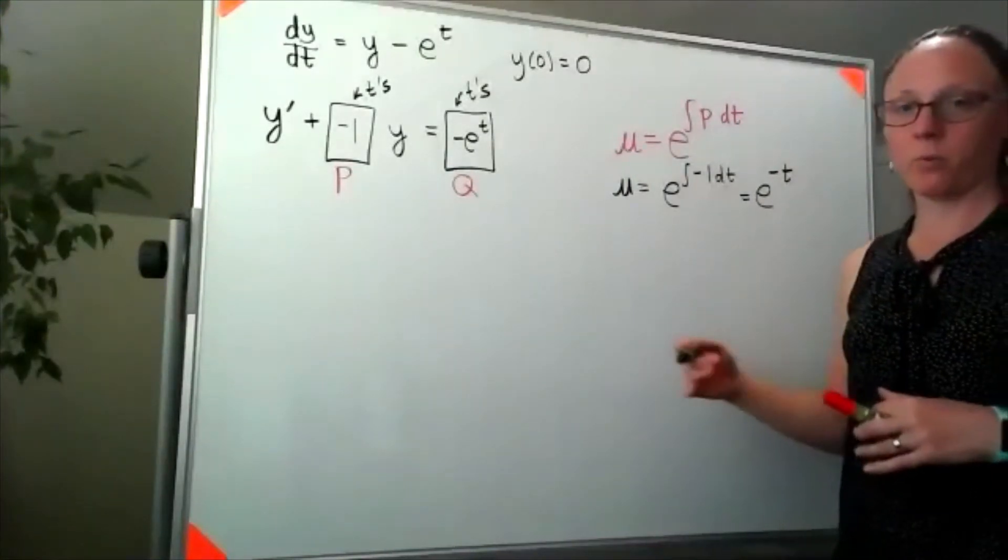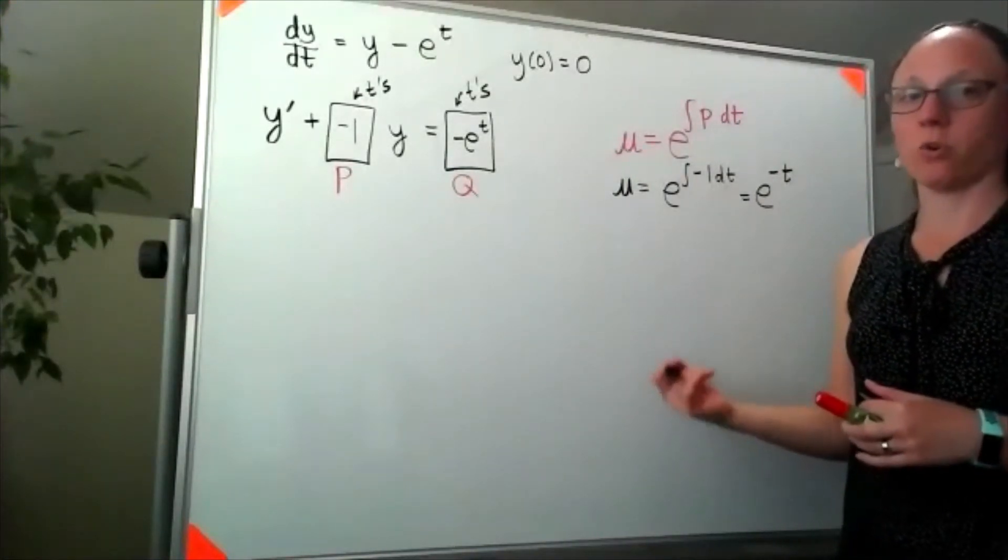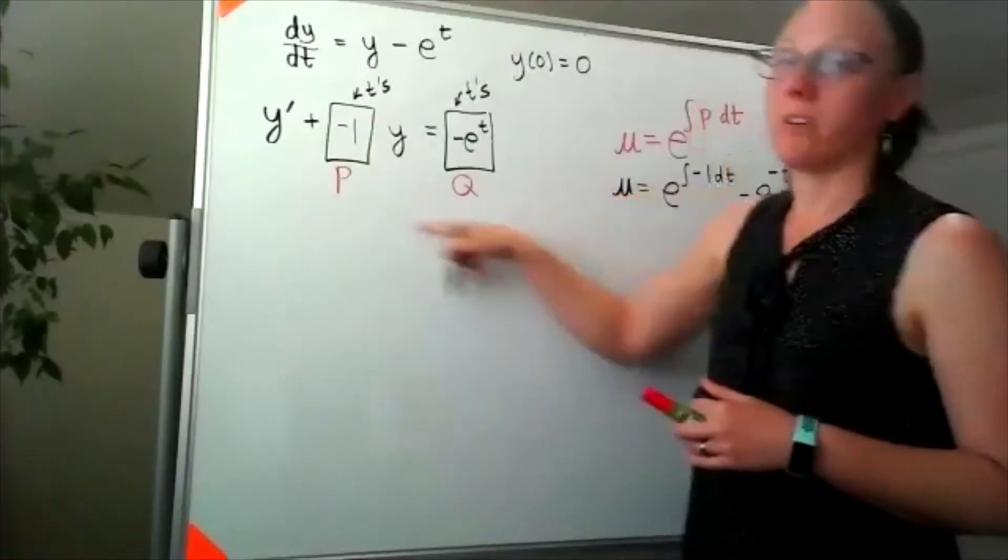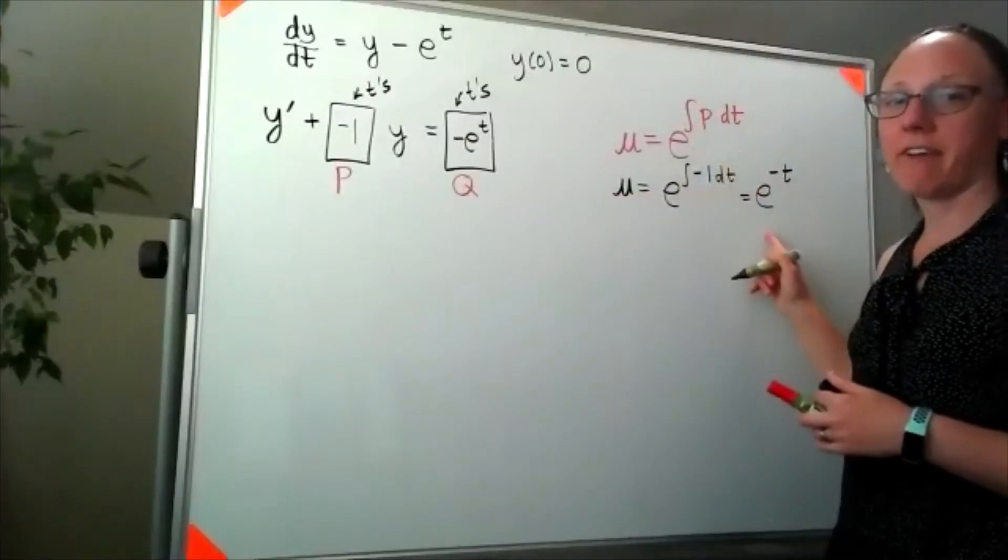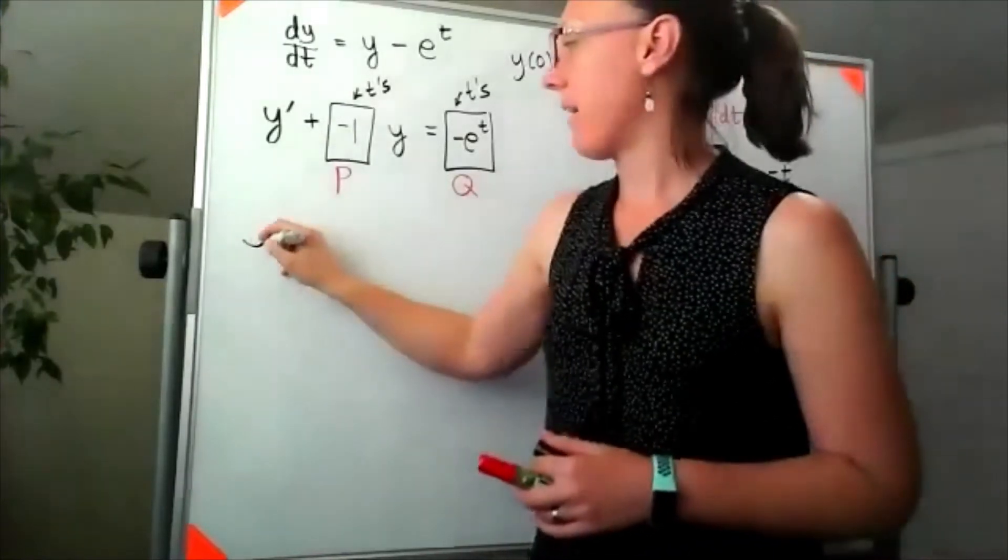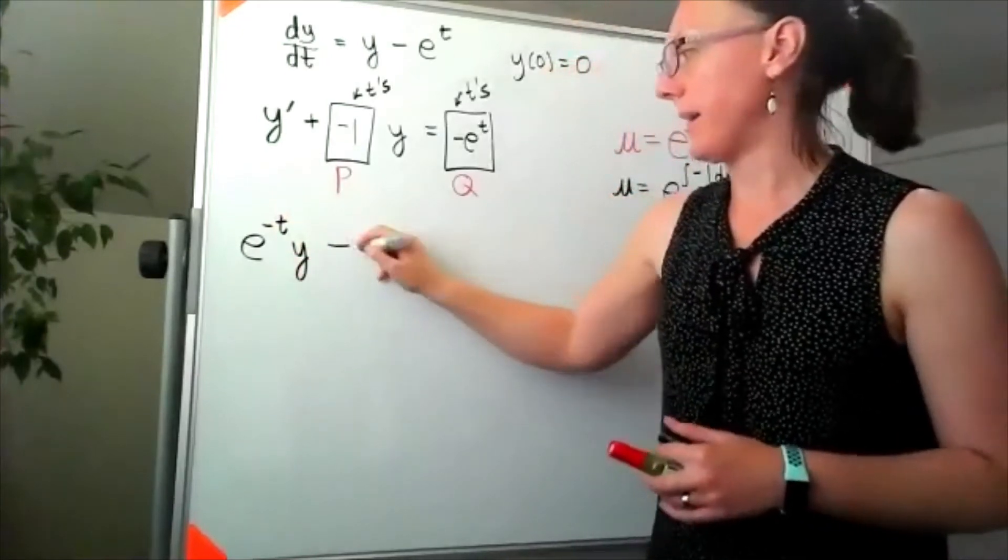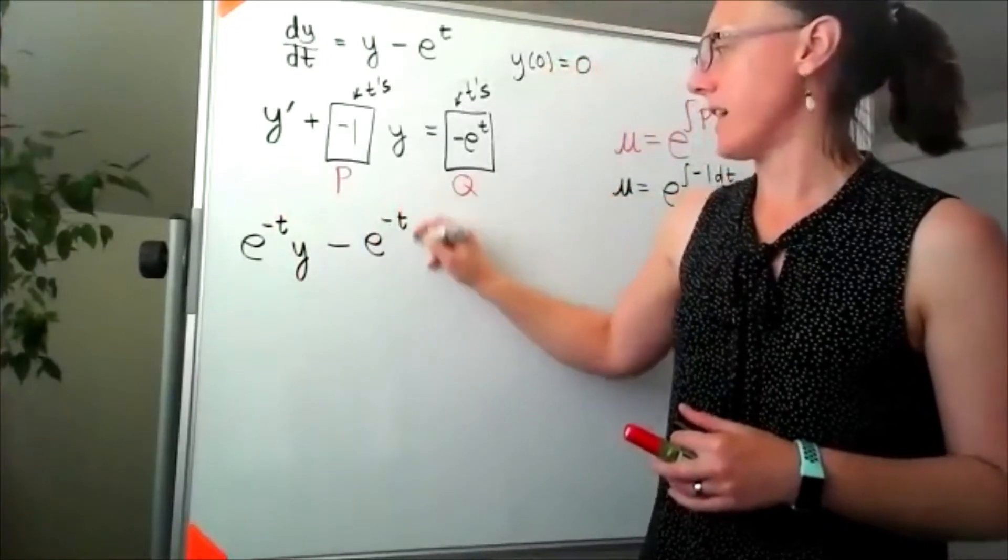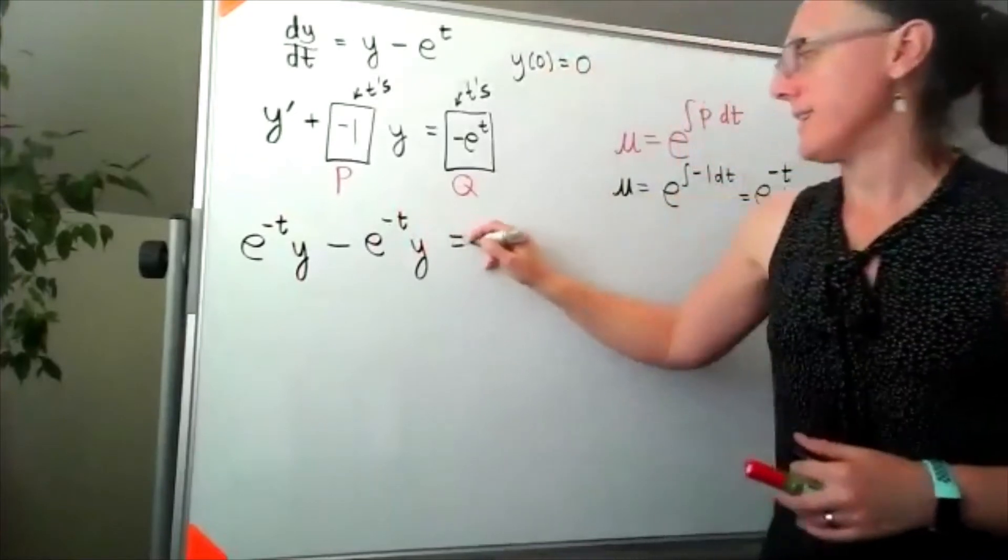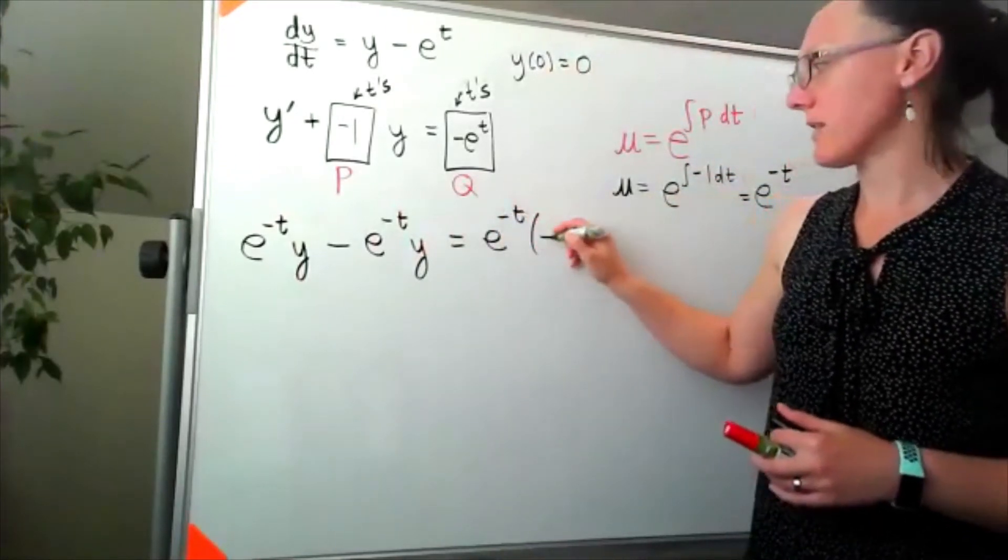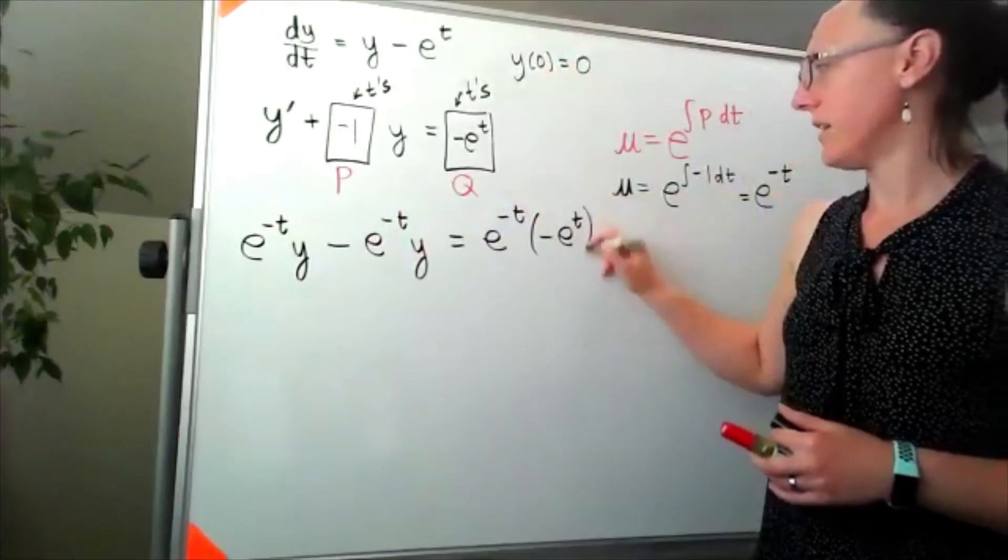The next step when we're solving a first order linear differential equation is to multiply everything through by that integrating factor. So I'm going to have e to the negative t times y prime minus e to the negative t times y is equal to e to the negative t times negative e to the t.